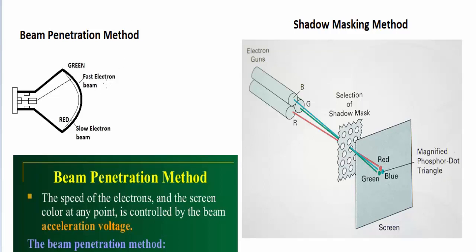First, we will see the beam penetration method. The way it works is that we have the phosphor screen which consists of two layers: the outer layer is coated as red, and the inner layer is coated as green.